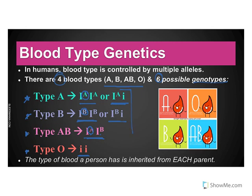Also make sure you make a note that you need to memorize these things. When you are given genetics problems on your test, you are not going to be given the genotype for whatever blood type is in the problem. You will need to know how to write it — whether it has capital I's, lowercase I's, A's, B's. So make sure you pause here and have these genotypes written down.